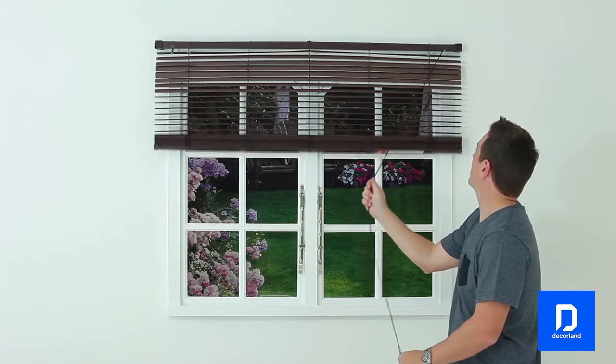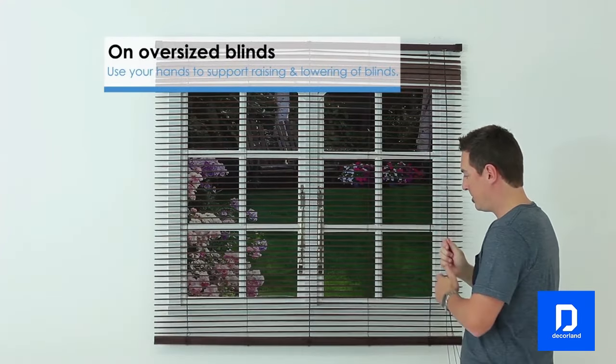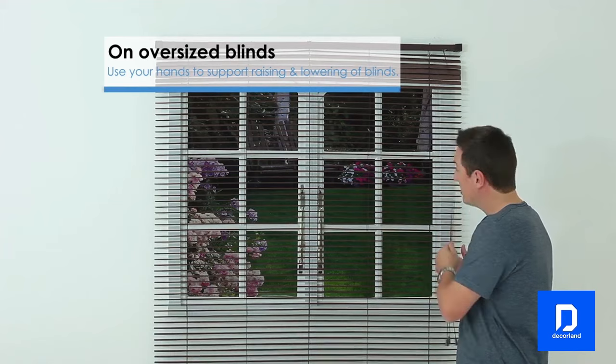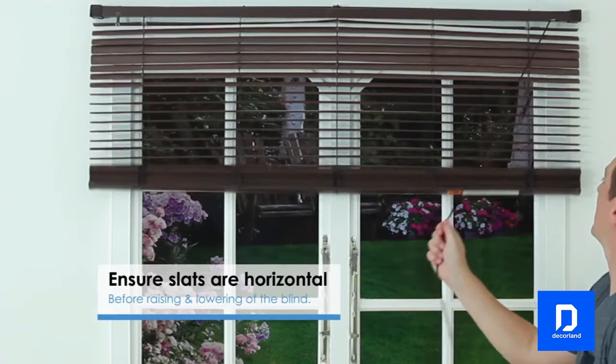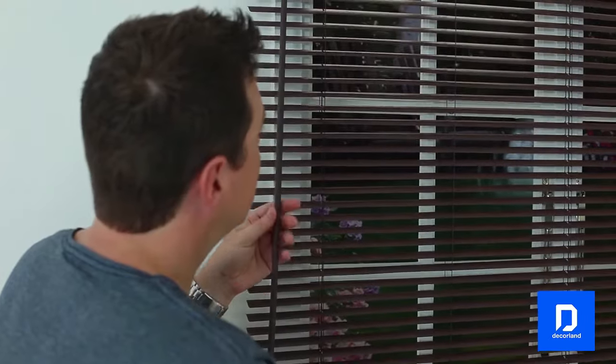To lower your blind, pull the cords to the center of the blind to release the cord lock and hold while the blind drops. Allow the blind to drop to the desired height, then move the cords to their original position to lock the blind in place.